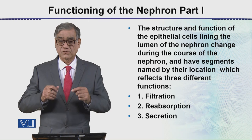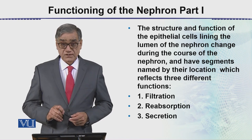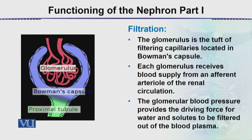The structure of the Bowman's capsule is just like a cup which is bulging inside — it is a rounded structure. The epithelial cells here are different from those present in the tubule. There are cuboidal cells and flat cells.